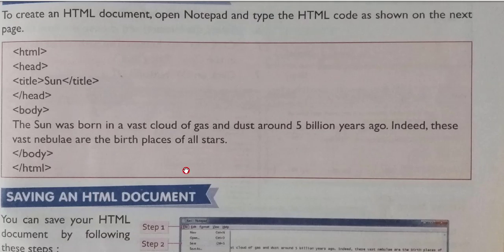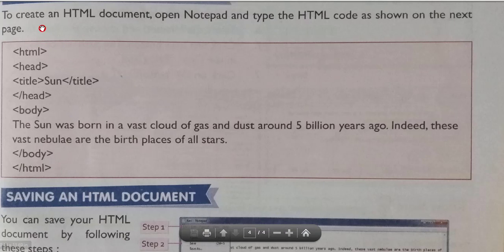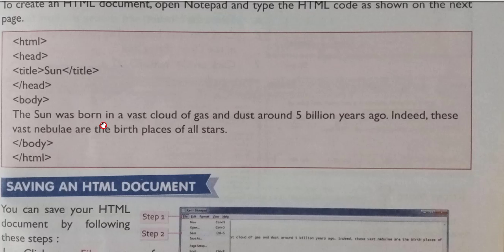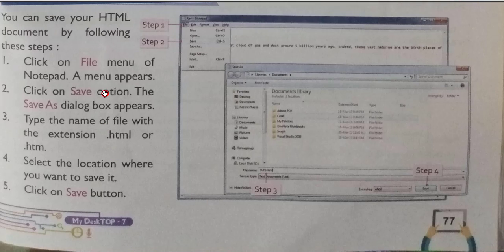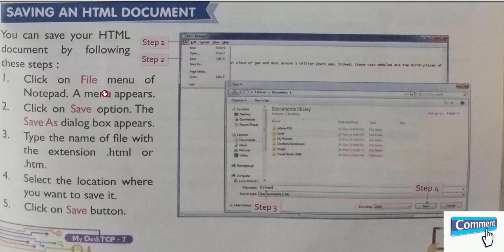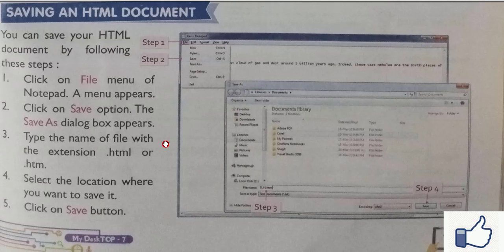Here is an example of an HTML web page structure: first line is the html tag, then head tag, inside which we write the title tag with content, then title is closed, then head is closed. Next, the body tag is opened, content is written inside it, then body is closed, and finally html is closed. This is the proper structure of your HTML page. In our next video I will show you the practical demonstration. Till then, watch the video, press the like button, subscribe to my YouTube channel, and press the bell icon to get new videos daily.